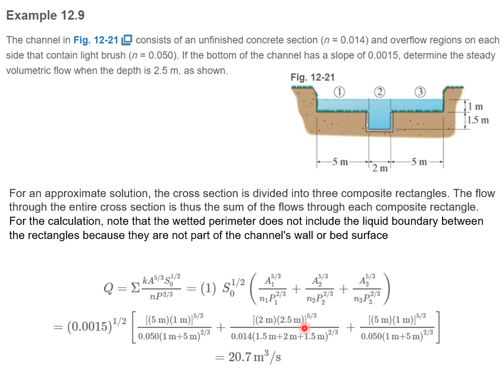We repeat that for each rectangle, for rectangle 2 and rectangle 3. We calculate the Q value. Composite is 20.7 cubic meters per second.